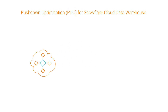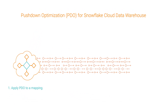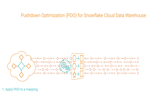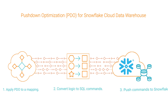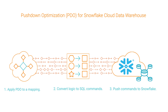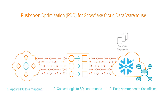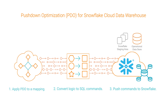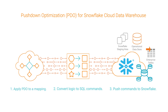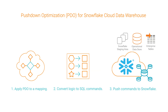When you apply data warehouse pushdown optimization to a mapping, Cloud Data Integration converts the transformation logic to SQL commands, pushes the commands to your cloud data warehouse, and then executes them. For this example, we'll load data to a Snowflake staging area first, then to the operational data store to process the transformations. Finally, Cloud Data Integration will push the data to the enterprise tables in Snowflake.